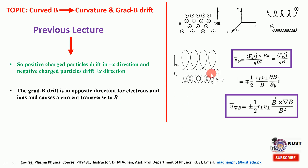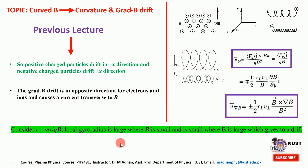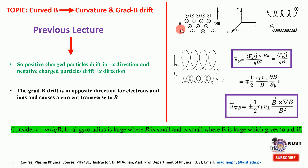We also discussed that the local gyro radius is large where the magnetic field is small, and the gyro radius is small where the magnetic field is large. Due to this, the charged particle experiences a guiding center drift due to the gradient in the magnetic field value.